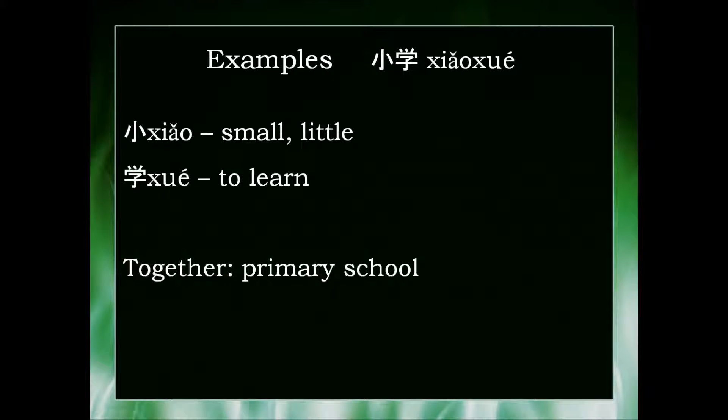Here's a brief explanation about the characters in this word. Xiao means small or little, and xue by itself means to learn, and it's also part of the word for school in Chinese. So together, xiaoxue means little school or primary school.